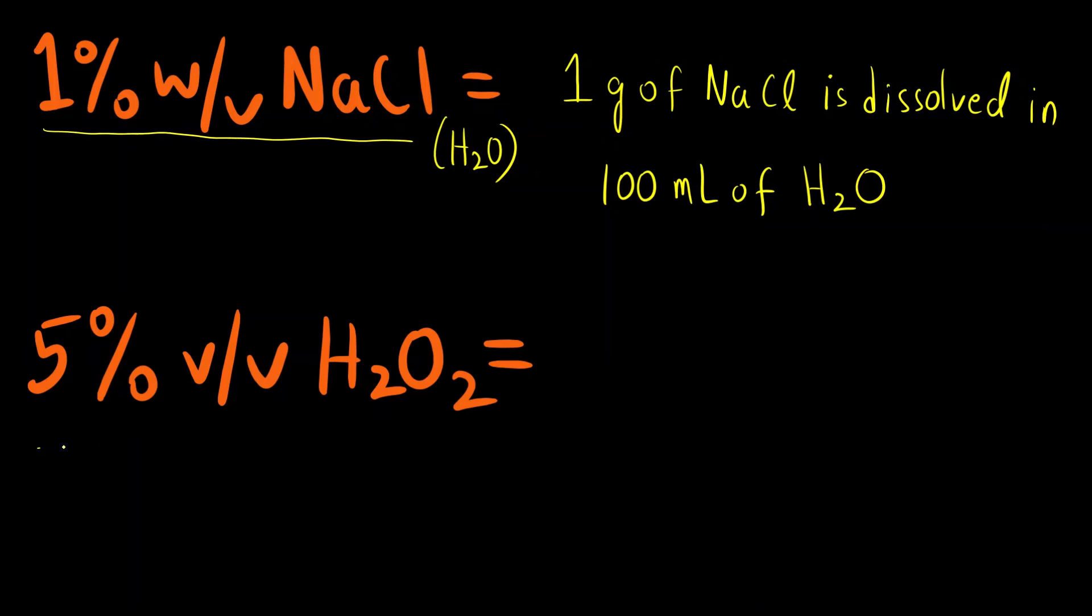Similarly, if I say 5% volume by volume of hydrogen peroxide, this means the volume of the solute divided by volume of the solution times 100.